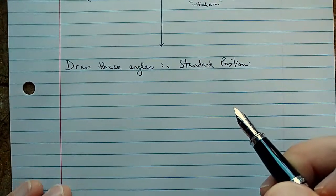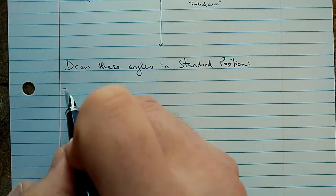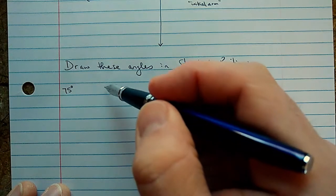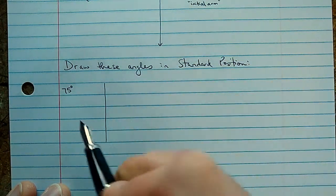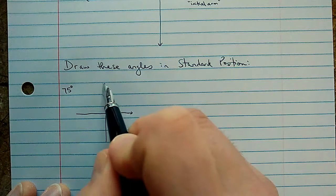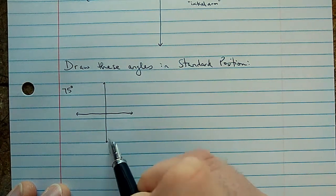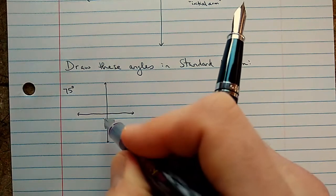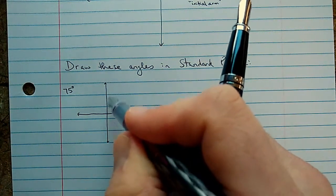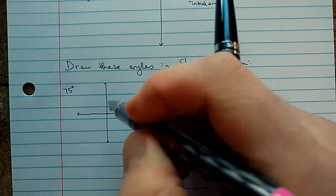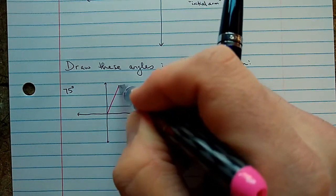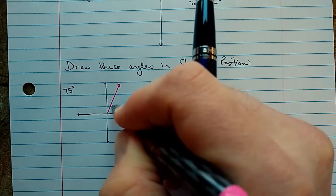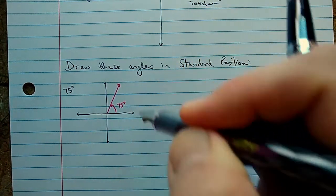And for each one, we'll just sketch our little x-y grid. So let's start with 75 degrees. Draw myself a little set of axes here. And I'll grab a color. 75 degrees is an acute angle starting at zero here. 90 would be this vertical line here, the positive y-axis. So 75 is probably something right about there. There's the terminal arm and this is the angle 75 degrees.